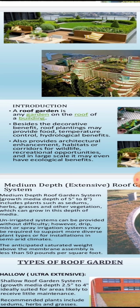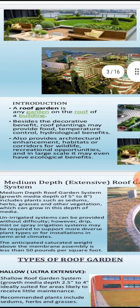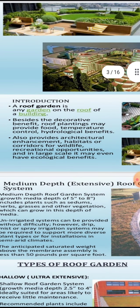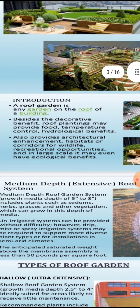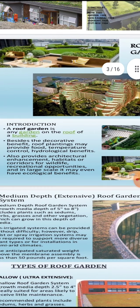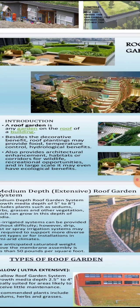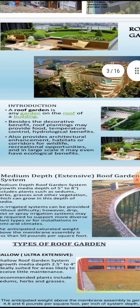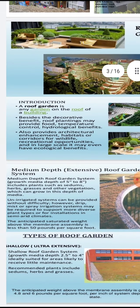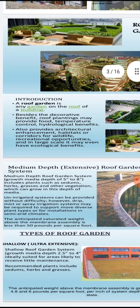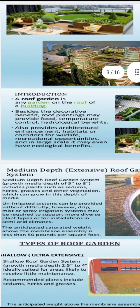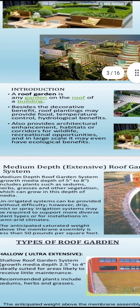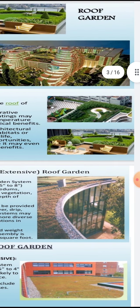A roof garden is any garden on the roof of a building. Besides being decorative, it generally provides food, temperature control, and hydrological benefits. Certain vegetable crops are easy to grow at the top of the home. In summer, the roof gets heated due to sunlight intensity, and the hydrological benefit keeps it cool through watering the plants.